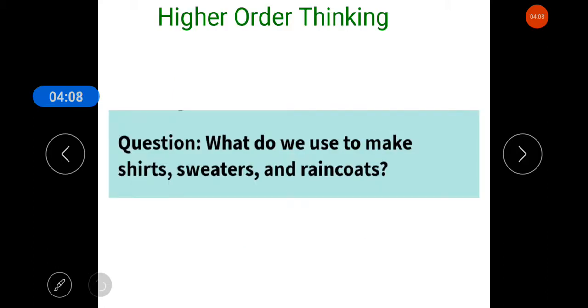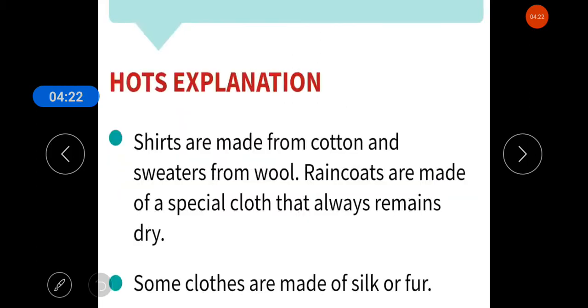Now, it is time for the higher order thinking question. Question is, what do we use to make shirts, sweaters and raincoats? So, what do we use? Some clothes are made of silk or fur.